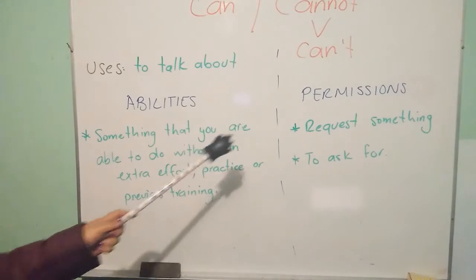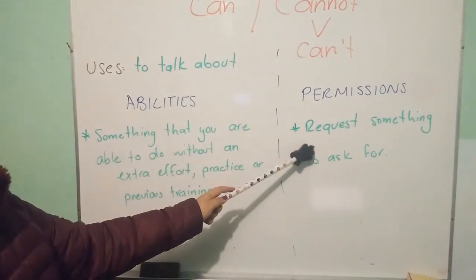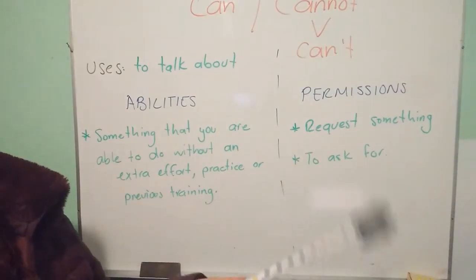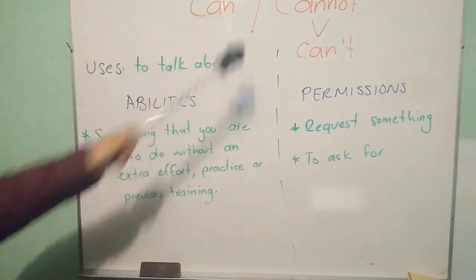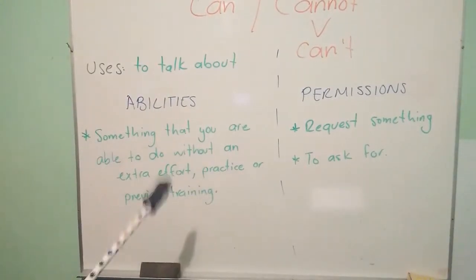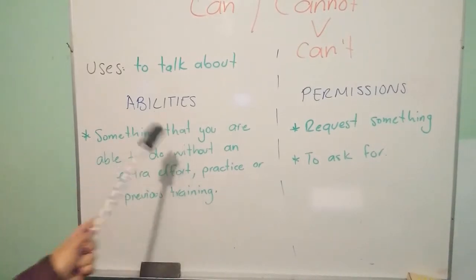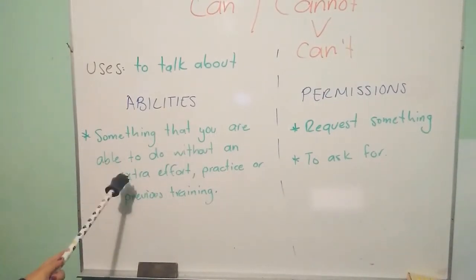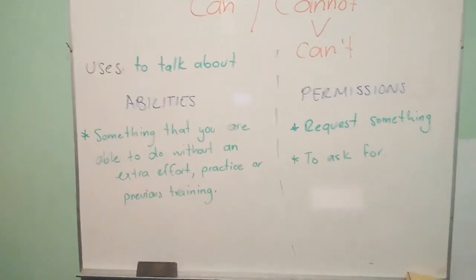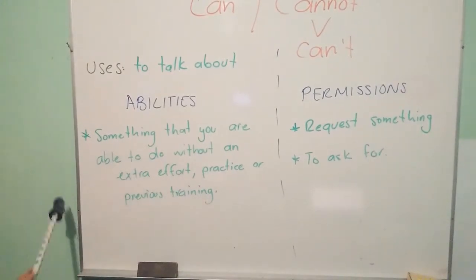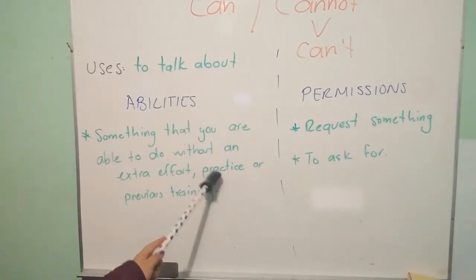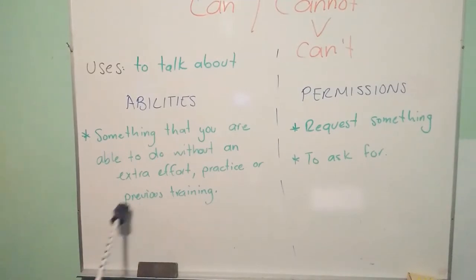And if it's a permission, it's because you want to request something or you are asking for something. Entonces, si usamos can and cannot, recuerden que es para hablar de habilidades y permisos. Si decimos que es una habilidad, significa que es algo que puedes hacer sin ningún esfuerzo extra, sin alguna práctica previa o un entrenamiento previo.